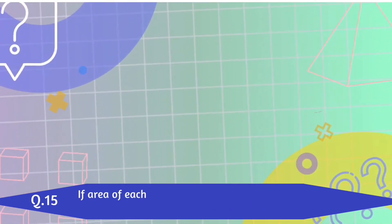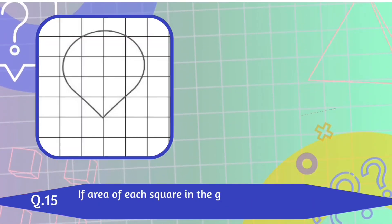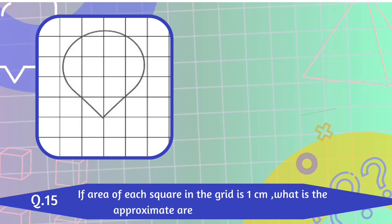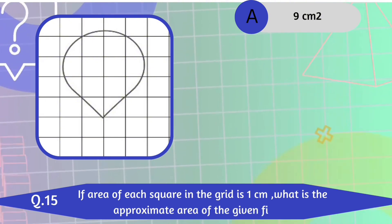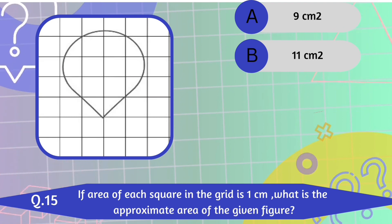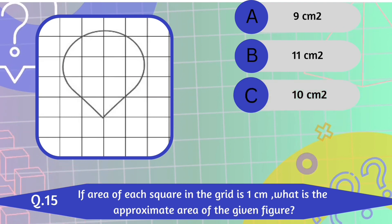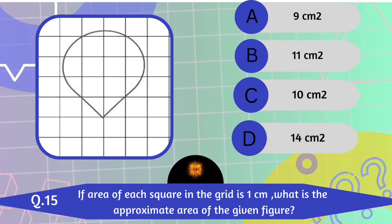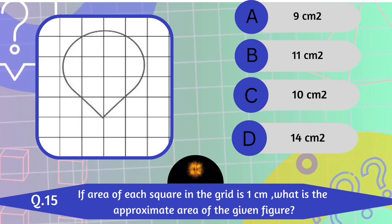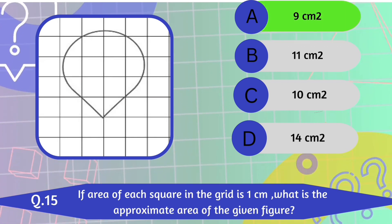Question number 15. If area of each square in the grid is 1 centimeter square, what is the approximate area of the given figure? A. 9 cm square. B. 11 cm square. C. 10 cm square. D. 14 cm square. 9 centimeters square is the correct answer.